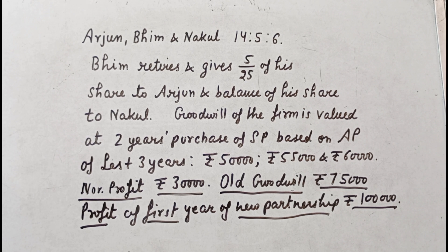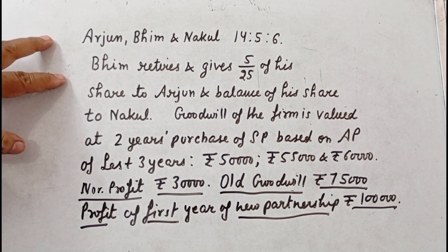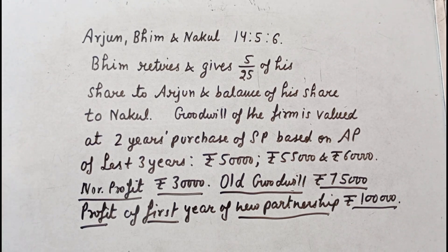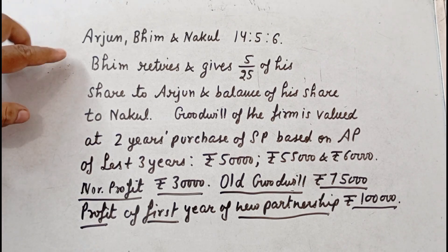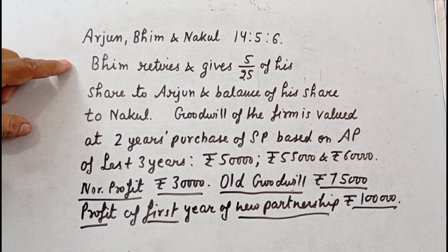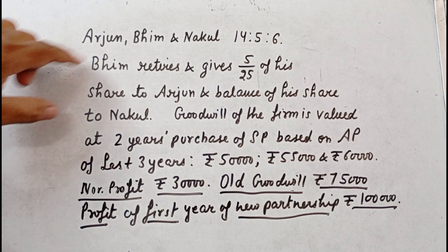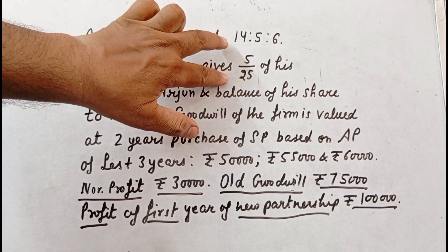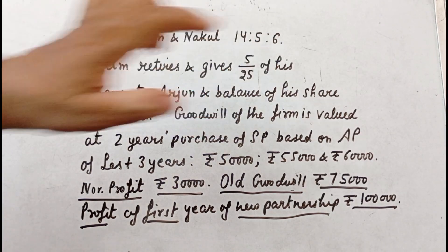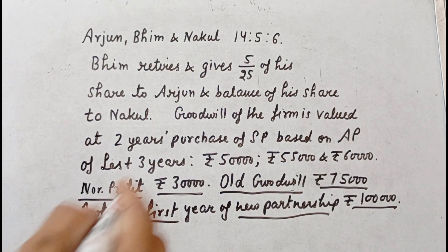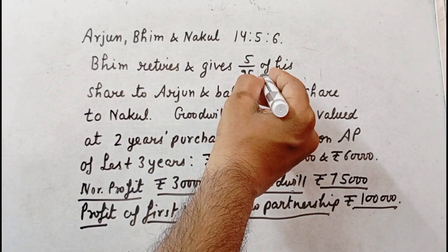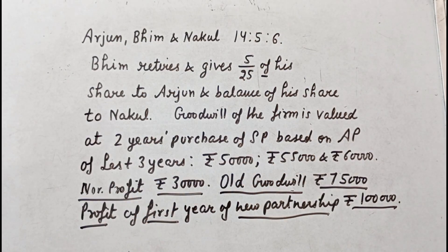Okay, so this is your question. In your question, Bhim is retired and gives 5 by 25 of his share to Arjun. You are required to give 5 by 25 office share to Arjun and the balanced share to Nakul.